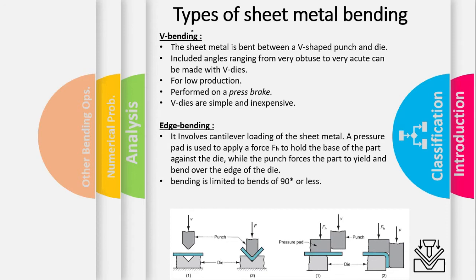There are two major types of sheet metal bending operations. The first one is known as V-bending, performed on V-dies. The second one is edge bending, performed on wiping dies. In V-bending, the sheet metal is bent between a V-shaped punch and die. It is used for low production, performed on a press brake, and is somewhat inexpensive.